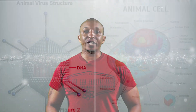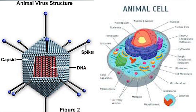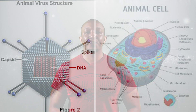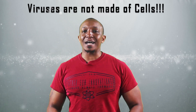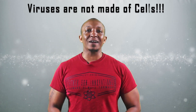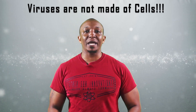Number five, the structure of viruses is very different from organisms. Take a look at the structural components of a virus versus a cell — the structural components are very different, and the shape and size of the cells are different as well. Number six, this goes without saying, but viruses are not made of cells.